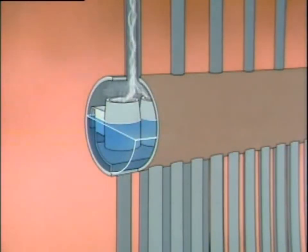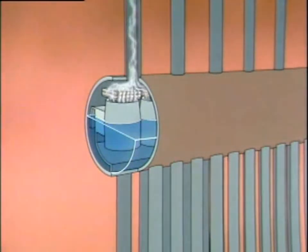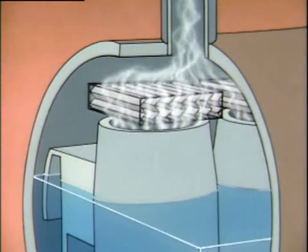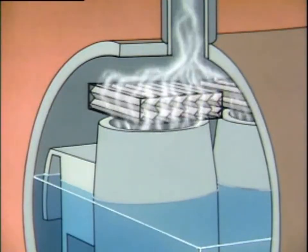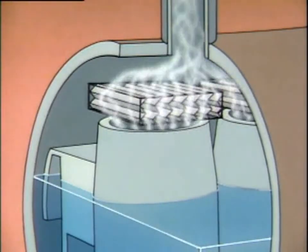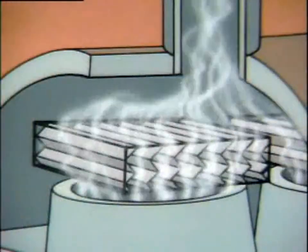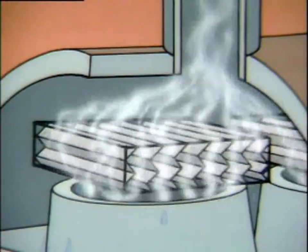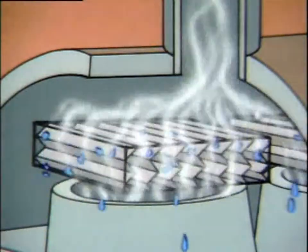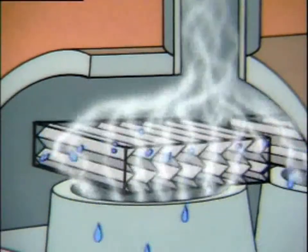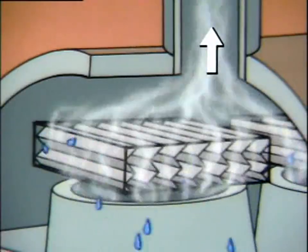Some boilers use a dryer along with centrifugal separators. This design is often found in processes where extremely dry steam is required. This dryer consists of a series of V-shaped plates. The steam flowing through them has to make several changes in direction. The water droplets can't change direction as easily as the steam, so most of the droplets separate and drip back into the drum. The steam flows through the dryer and onto the plant.